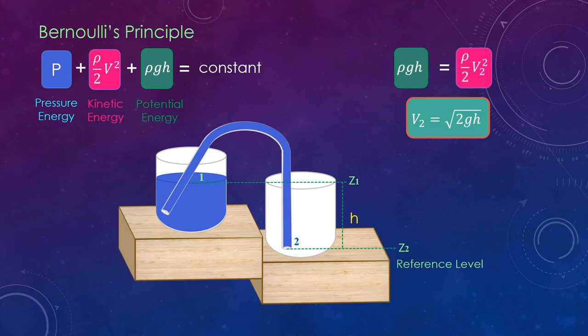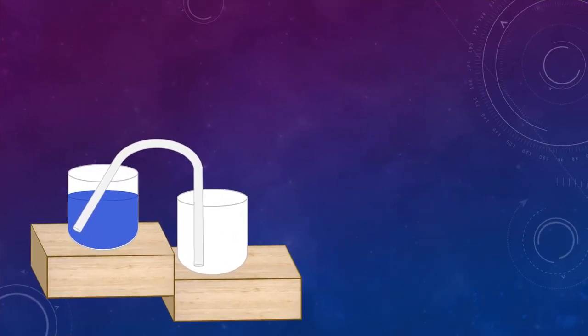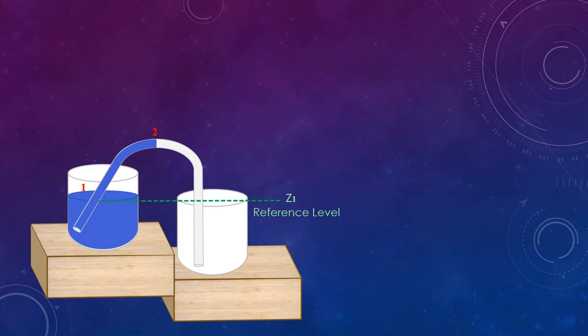Now the next question is: if siphoning can help to raise water to heights without any external equipment, then why is it not used to raise water in high water tanks? This is because there is a maximum limit to the height up to which water can be raised. Let's find it. In this setup, let's take point 1 on the surface of the water-filled beaker and point 2 at the maximum height inside the inverted tube. Point 1 is taken to be at reference level z1, and point 2 is at height z2 from the reference level, and the difference between them is represented as h.